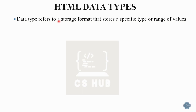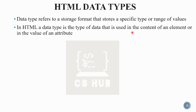This data type refers to a storage format that stores a specific type or range of values. That is what a data type means — it's a storage format that stores a specific type or range of values. And in HTML, a data type is the type of data used in the content of an element or in the value of an attribute.